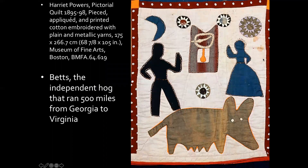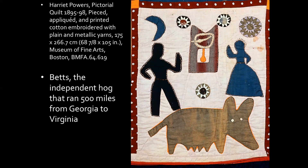This one has to do with — and the story sounds very Southern to me — the independent hog that ran 500 miles from Georgia to Virginia. There are a lot of stories about dogs doing the same thing. People are attached to both dogs and pigs, so that's what she's referring to in this one. The next panel is one of the biblical stories — pause the video and try to figure out what it is.